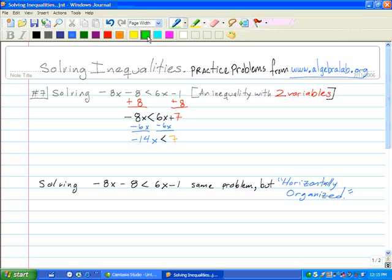Last step is to divide by a negative 14. And every time you divide by a negative, the symbol will switch or be reversed, and will point onto the other side. Therefore, my answer is x is greater than 7 over negative 14, which can be simplified to or reduced to negative 1 half.